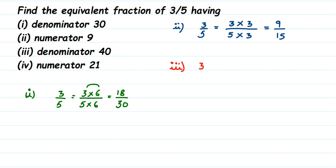The next one: the number is 3/5 and the denominator should be equal to 40. We have 5 in the denominator — with 5, what should we multiply to get 40? It is 8, since 5 × 8 = 40. So multiply 8 in the numerator: 3 × 8 = 24. We get 24/40.